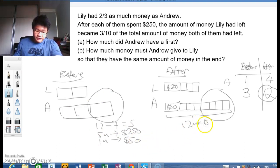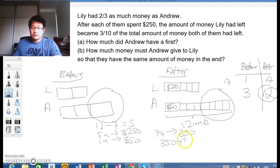So with this, we can answer the question, how much did Andrew have at first? Well, Andrew had 7 units and $250. So it's actually 7 units is $350. And $350 plus $250 gives me $600. So actually, Andrew had $600 at first.